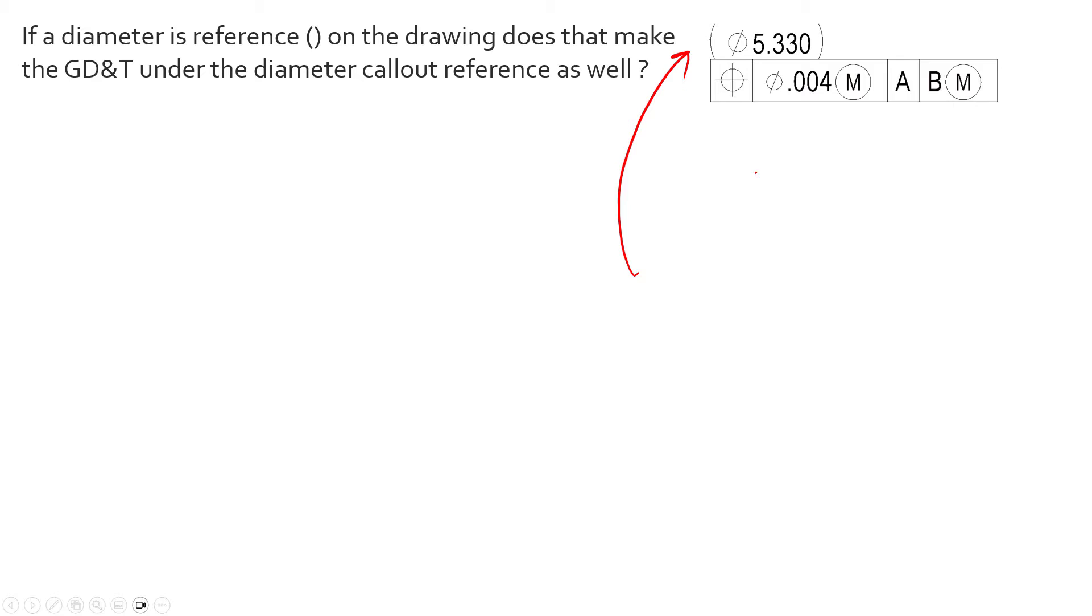Typically what we see is the lack of parentheses, and then we have some sort of plus-minus tolerance that follows the size dimension, and then we control the position or perpendicularity or some geometric control to that feature of size. However, sometimes there are situations where the feature that we are controlling the location of needs to have a reference size dimension—in other words, no tolerance, it's just a reference on the size.